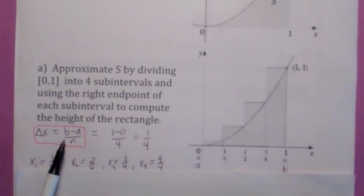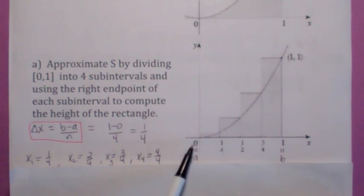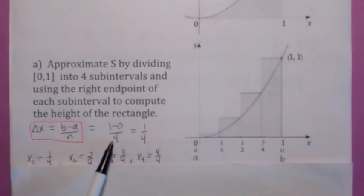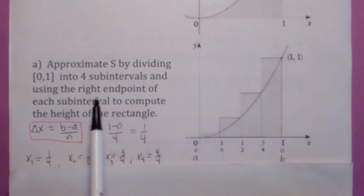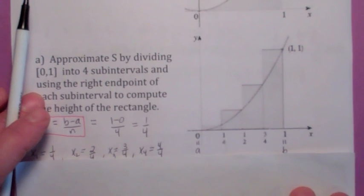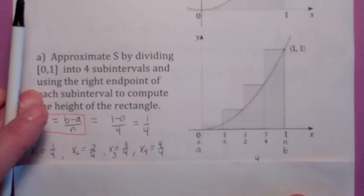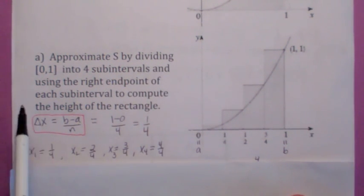The width of the subinterval is always b, the right endpoint, minus a, the left endpoint, divided by the number of subintervals. So in this case, delta x is 1 fourth. Now we're going to use the right endpoint of each subinterval to compute the height of each rectangle. It's actually easier that way, but you can use the left endpoint as well.